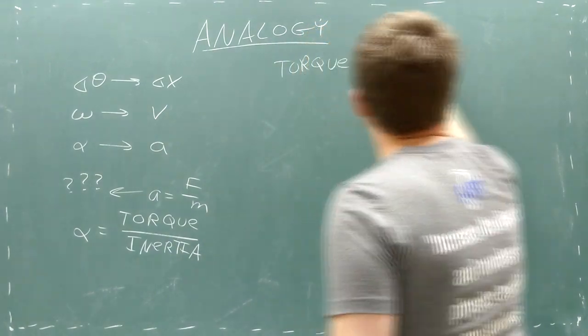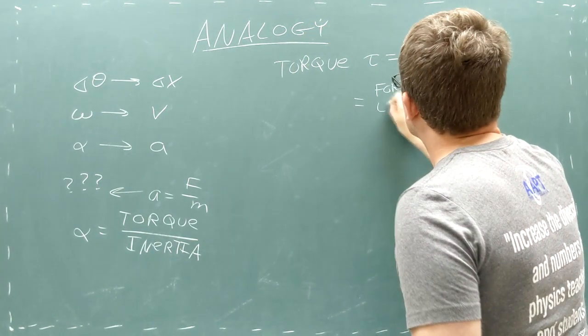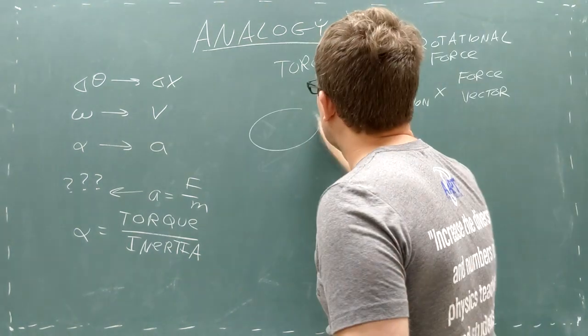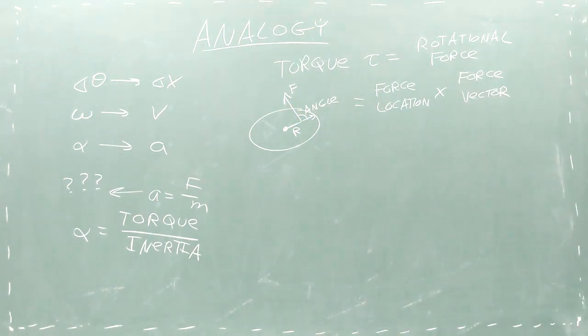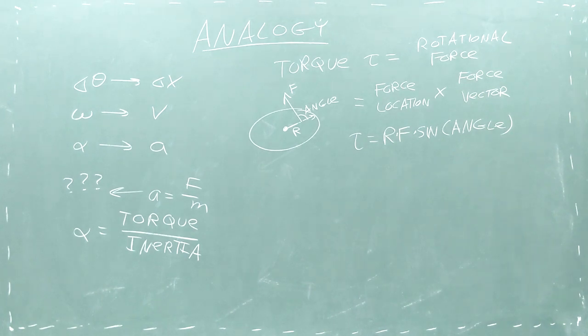Torque is the rotational equivalent of force in that you need to exert a torque on a shape to accelerate its rotation. We calculate torque as the cross product of the location where you exert the force with the force vector. The cross product means you multiply two vectors' magnitudes with the sine of the angle between the two vectors.